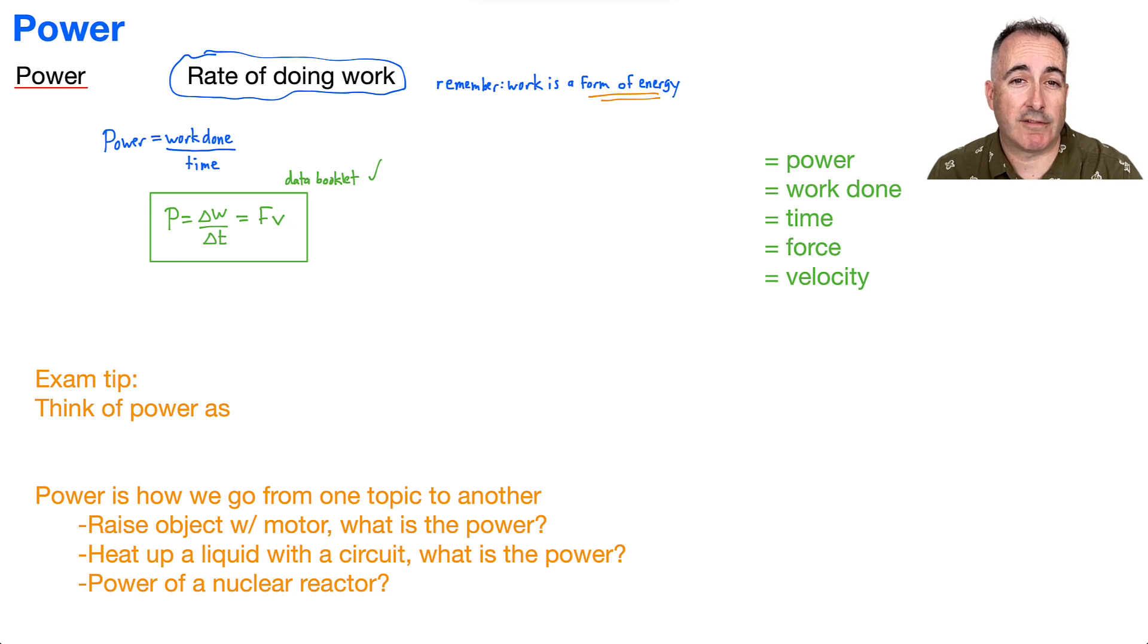So let's define all of our variables. Capital P is going to be the power. We're going to have W as the work done, T is the time, F is the force, and V is the velocity.